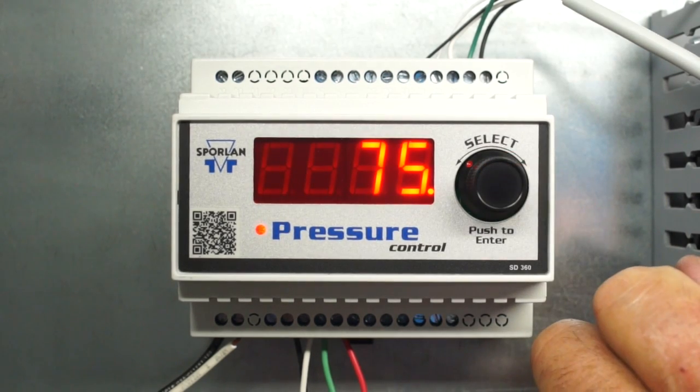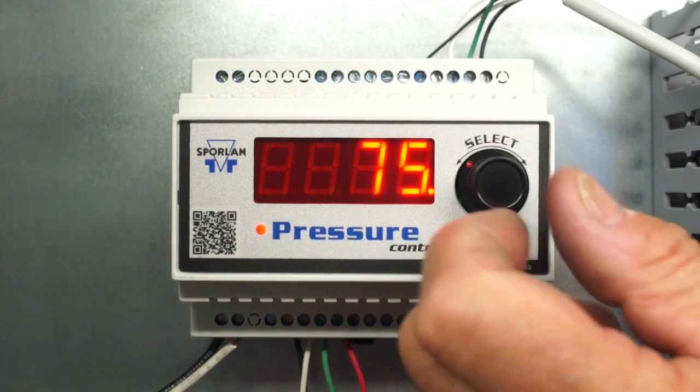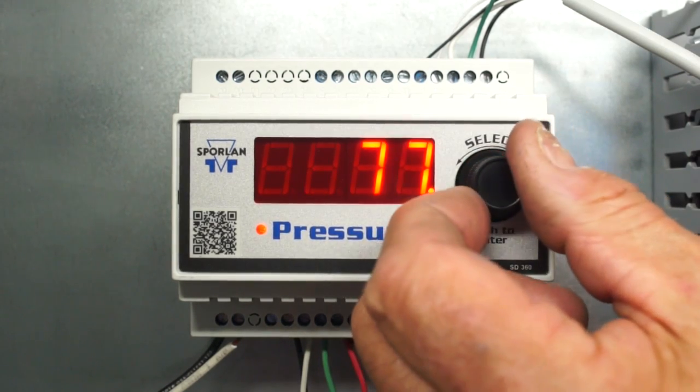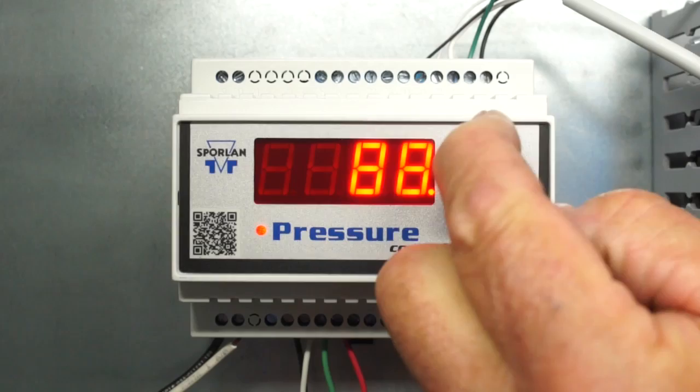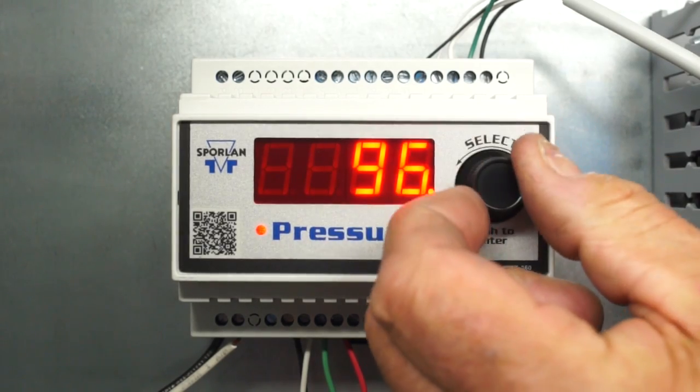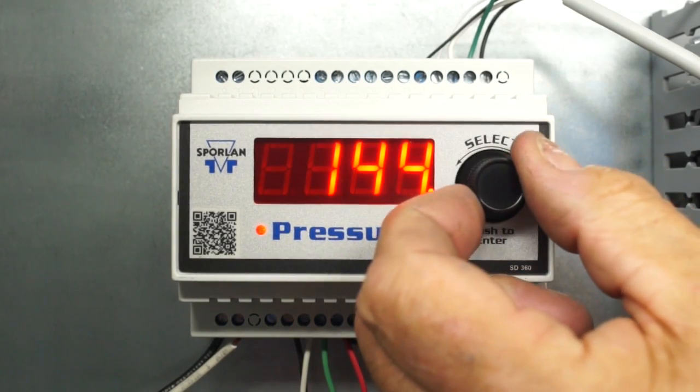Next, set the pressure set point PSP using the select knob to dial in the desired pressure set point for the system. Press the select knob to save the selected set point.